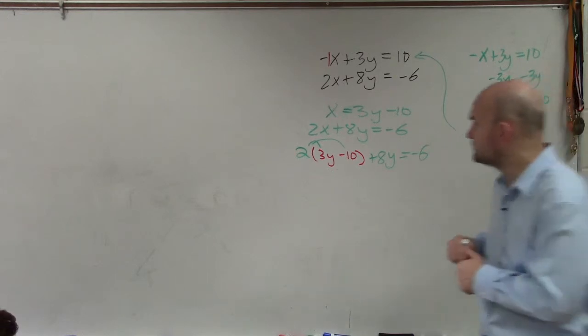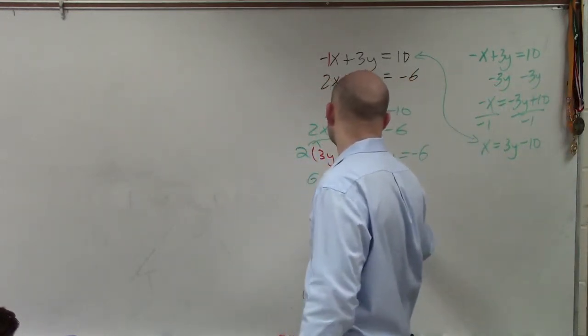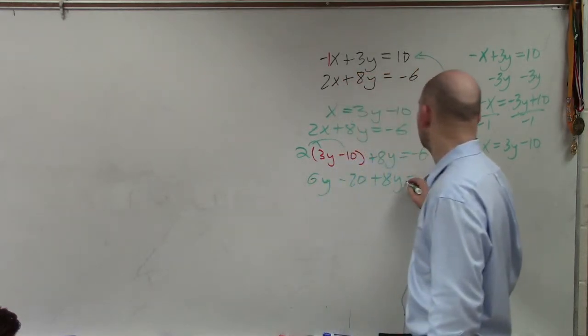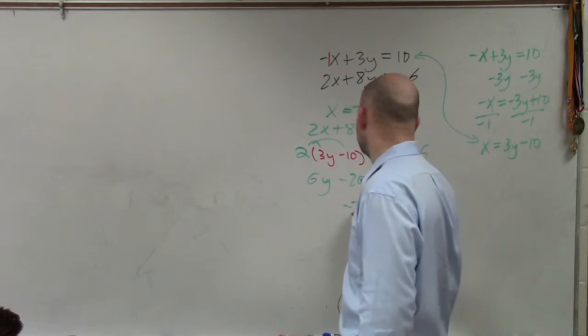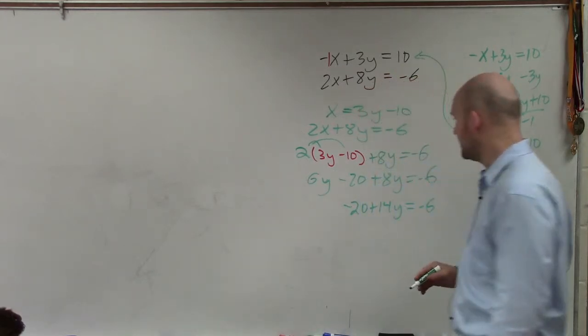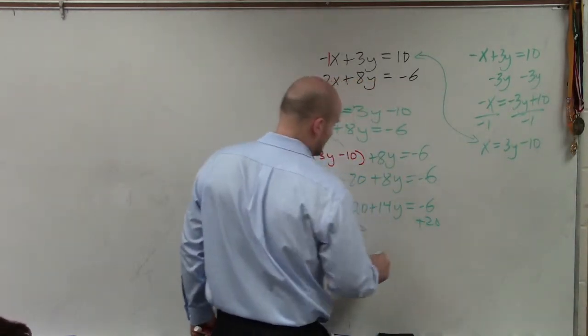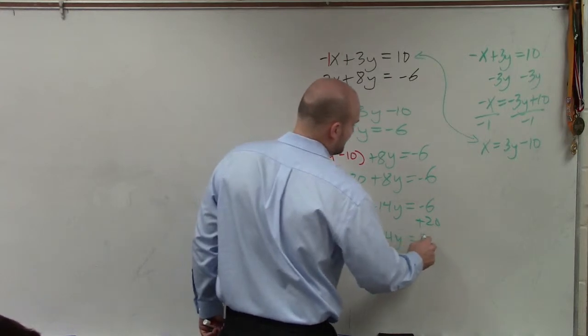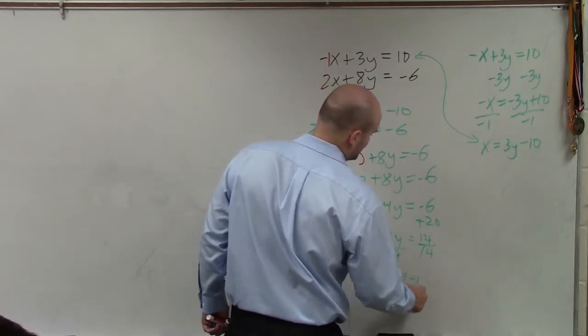And I will obtain 6y minus 20 plus 8y equals negative 6. 6y plus 8y is going to be 14y equals negative 6. Solve for y. So I add 20, add 20, 14y equals 14, divide by 14, divide by 14, y equals 1.